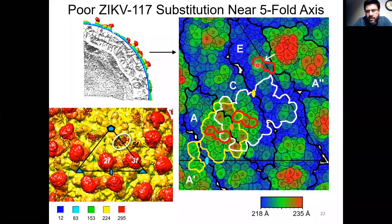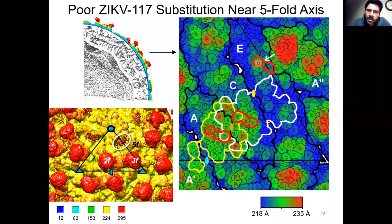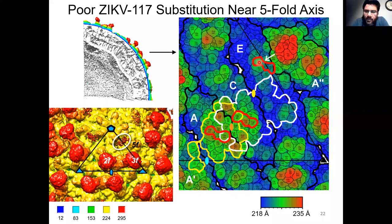This cluster of E-protein residues acts as a mount that restricts access to the 5F site, which is located at the foot of the mount. If an antibody or FAB is trying to bind there, it will be unable to do so simply because this binding site lies at the very foot of this large mountain. There will be steric clashes and the antibody will not be able to access the 5F binding site.